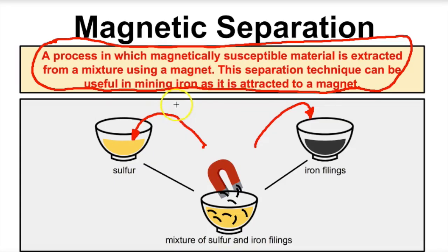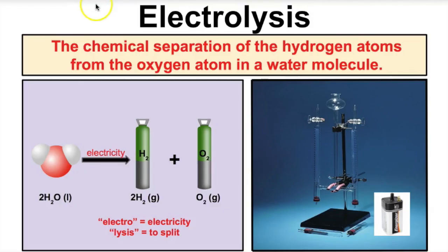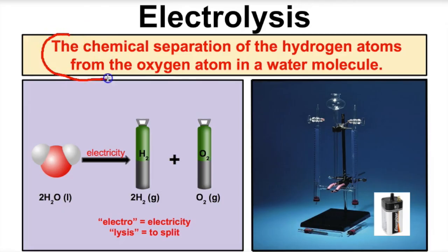So far we've talked about six different separation techniques for a mixture, and every one of those has been a physical process. Let's now turn to the separation of a compound or pure substance using a chemical process and talk about electrolysis. Electrolysis is the chemical separation of the hydrogen atoms from the oxygen atoms in a water molecule, and this is the only one we're going to talk about today that is a chemical process.